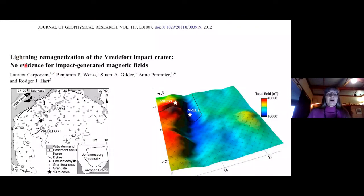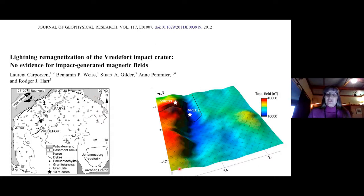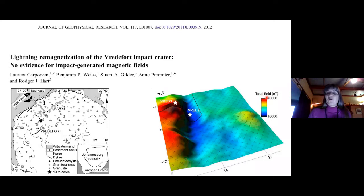There was a study in Vredefort by Karpunzen looking at lightning remagnetization in the Vredefort impact structure — a very detailed paleomagnetic study of a lightning strike. Every one of these little x's on this grid is a paleomagnetic sample that they drilled, and there are also Vrida 2 and Vrida 3 — two deep boreholes drilled 10 meters deep for continuous core for paleomagnetic study. The field goes from 16,000 nanoteslas up to over 40,000 nanotesla — a tremendous range over an area only about 30 meters across.